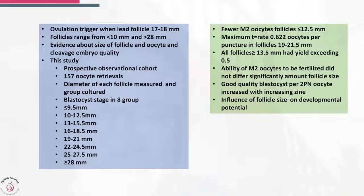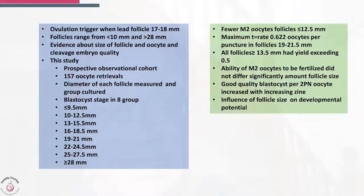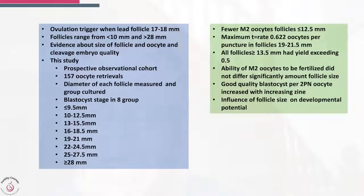This is a prospective cohort observational study with 157 oocyte retrievals. The diameter of each follicle was measured, group cultured, and blastocyst stage outcomes were checked across eight groups: less than 9.5 mm, 10–12 mm, 13–15.5 mm, 16–18.5 mm, 19–21 mm, 20–24 mm, and further size bands beyond that.